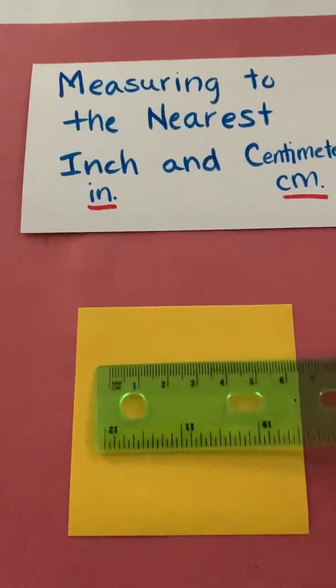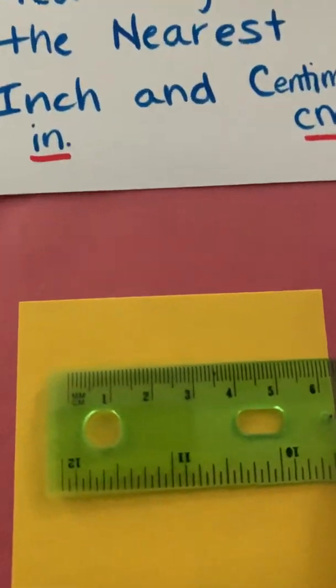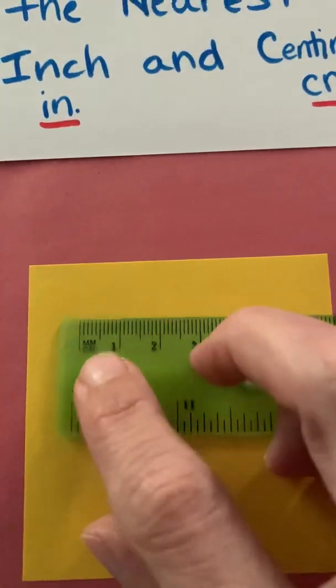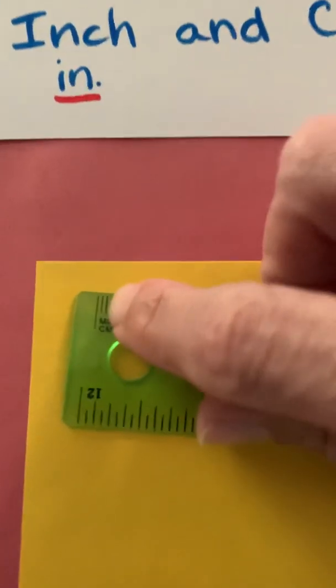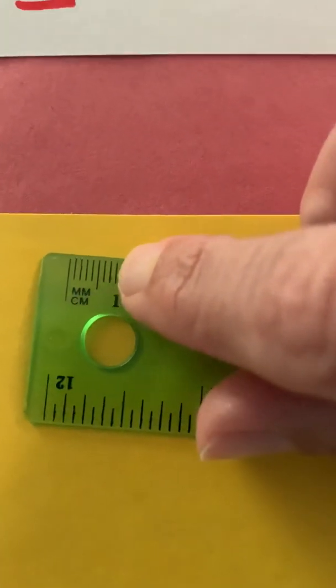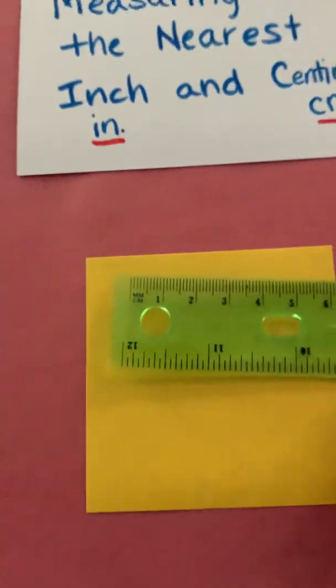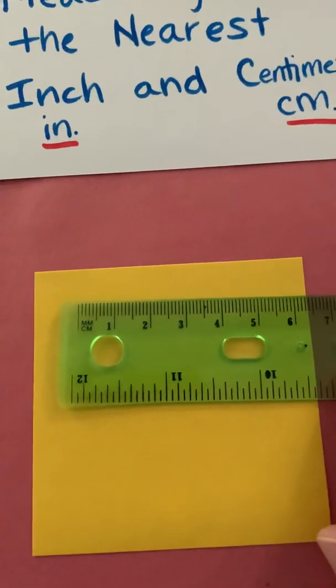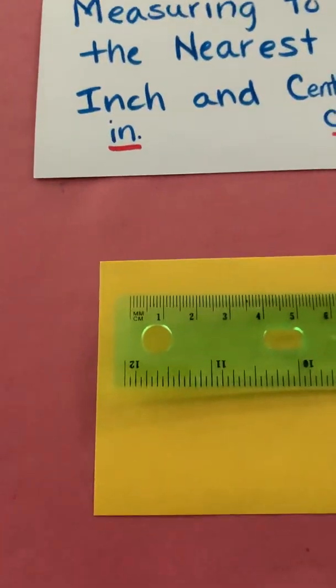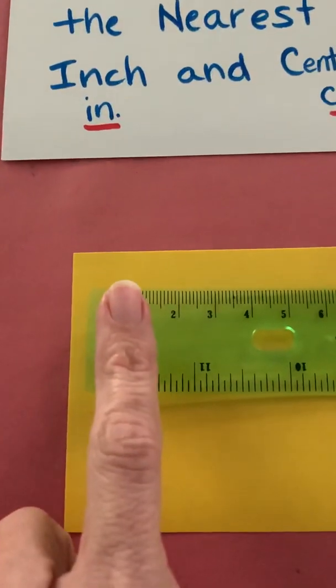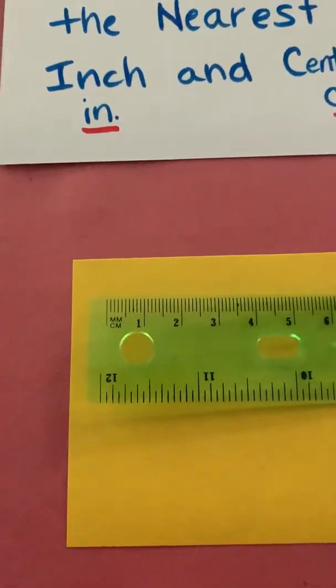Now looking at the centimeter side. If I want to look at my centimeter side you can see here they have the mm, that's millimeters. Millimeters are all those tiny little lines and it takes 10 millimeters to make one centimeter. But we're going to measure with centimeters. So centimeters, remember we said, is about the width of a pinky so we put it there, that's going to be centimeters.